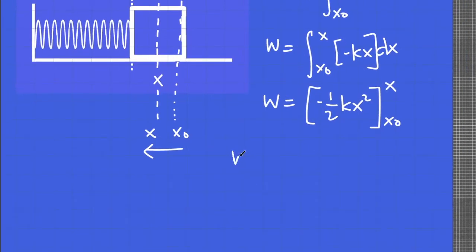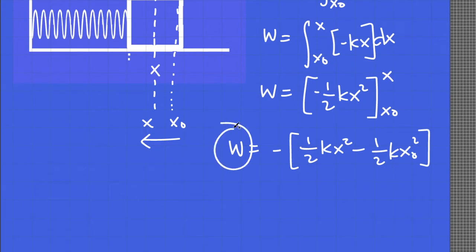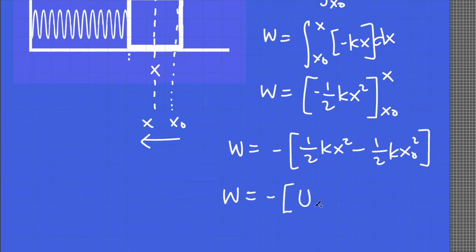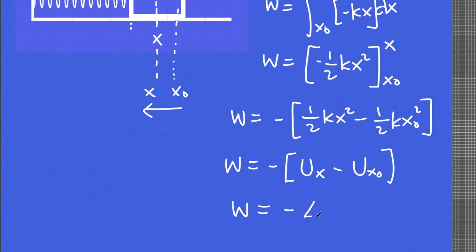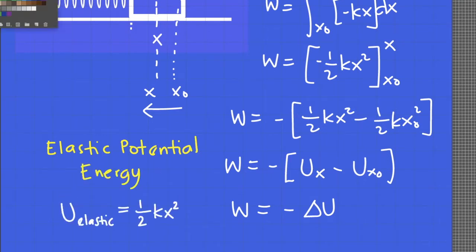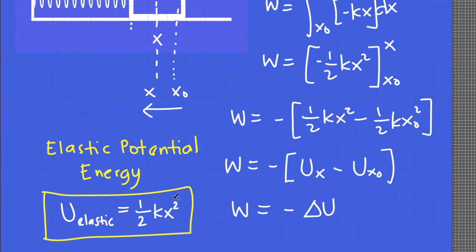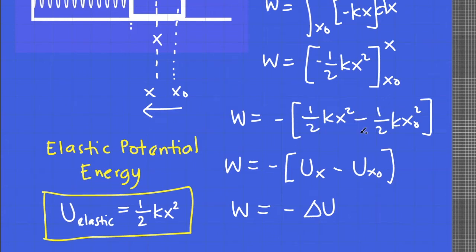We end up with work equal to negative of one-half kx squared minus one-half k x sub 0 squared. Since these terms have units of energy, we symbolize them as U sub x minus U sub x sub 0. So the work done equals a change in energy, and these terms have a special name: elastic potential energy. This equation tells us that when work is done on a spring, you're introducing a change in potential energy in the system — specifically, the potential energy stored in the deformation of the spring.